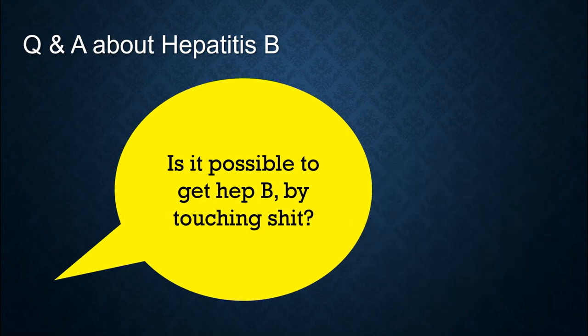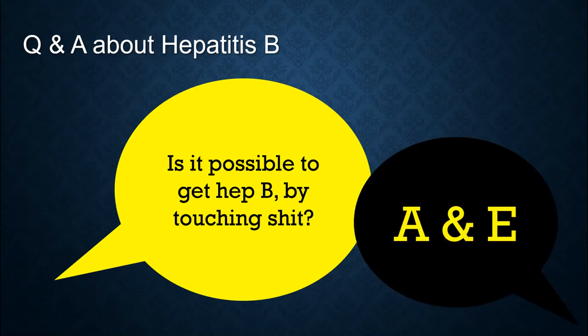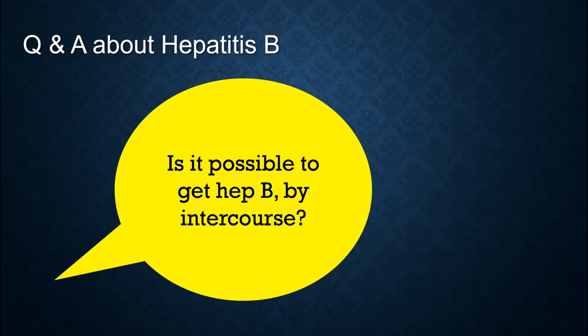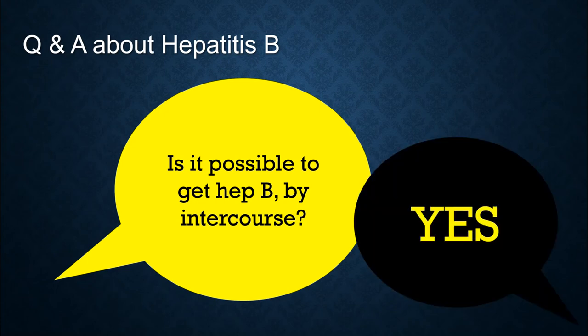Is it possible to get hepatitis B by touching feces? That case is also A and E, not B. Is it possible to get it by intercourse? Yes, absolutely. Because during intercourse, there is increased risk of skin tearing and it increases the risk of transmission through blood and semen.